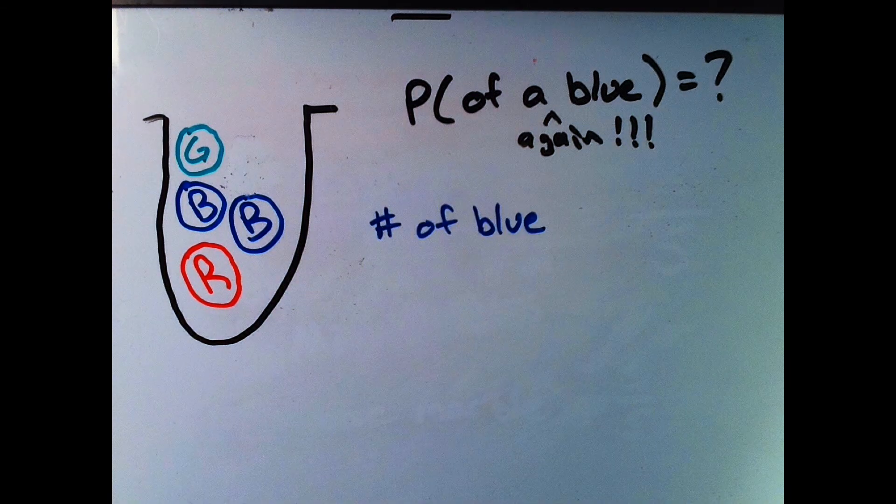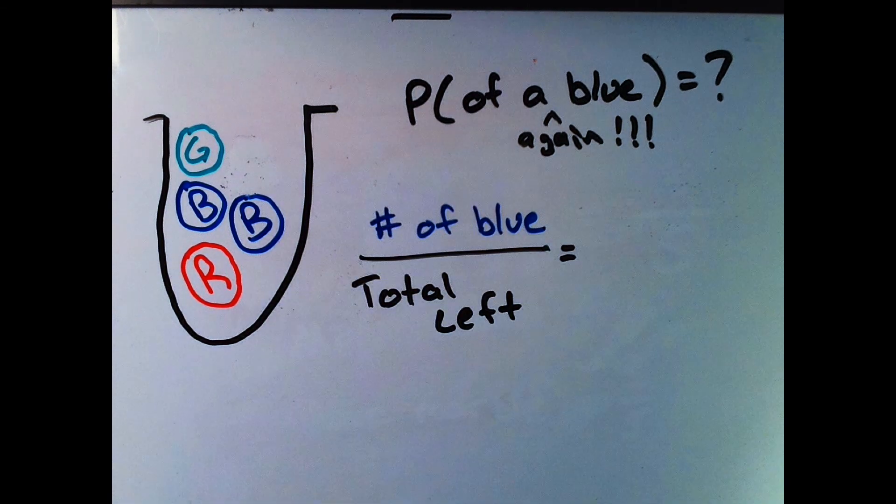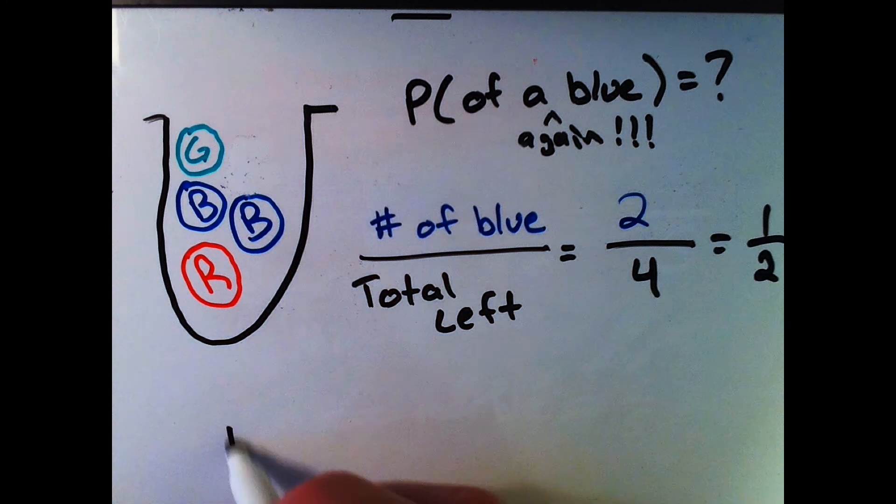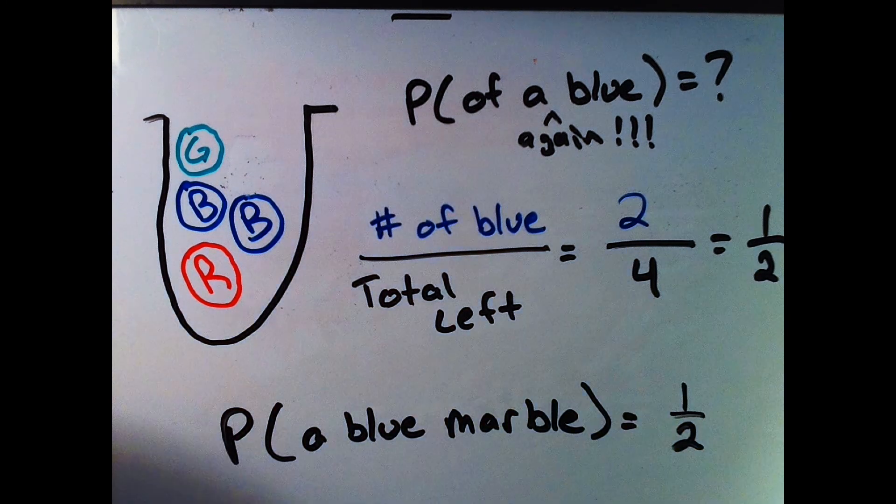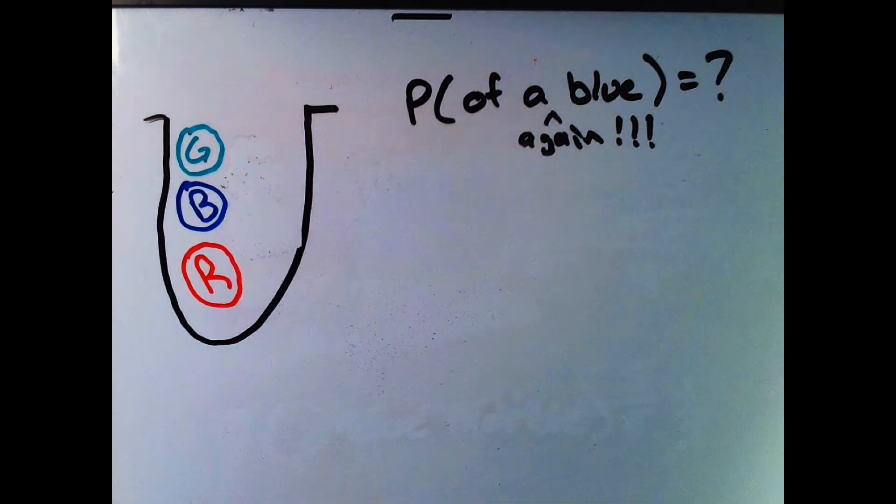If one marble is gone, now that blue marble, and we want to find the number of blue marbles over the total number left, it would be two marbles to four marbles, which would be one over two. So the probability of drawing a blue marble here is one-half.